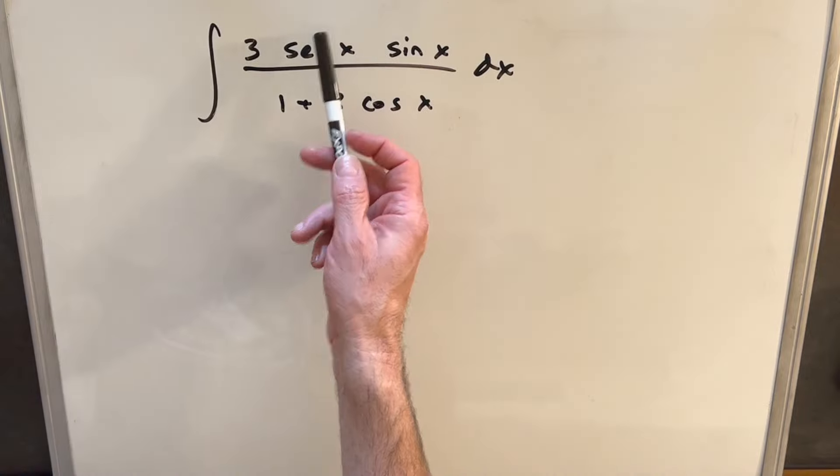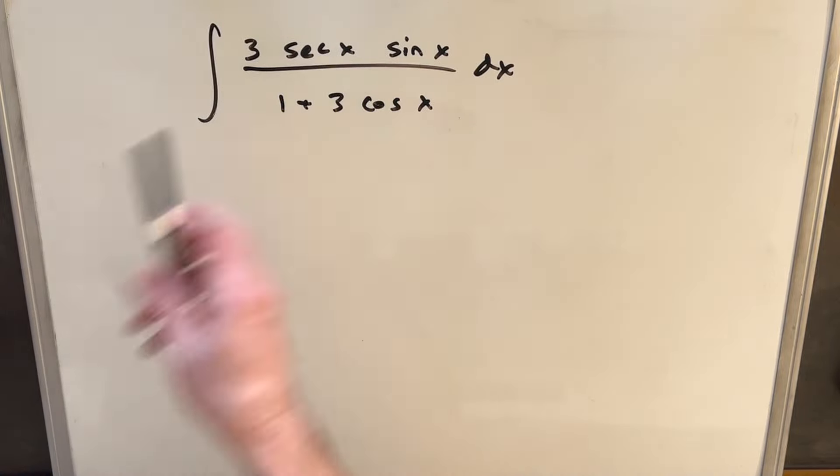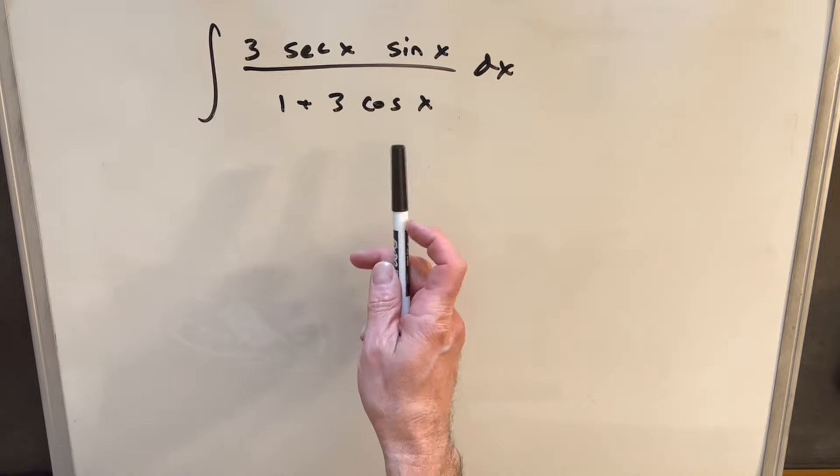And we notice, now secant is just 1 over cosine. If we multiply secant times sine, we've got tangent. But that's not really helping me.